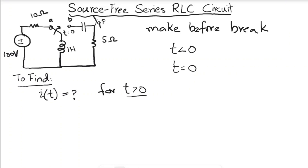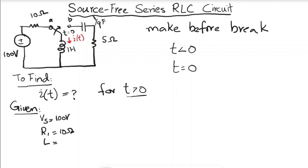We have to find the current i(t) for t greater than zero. The given values are: Vs = 100 volts, R1 = 10 ohms, L = 1 henry, C = 1/9 farads, and R2 = 5 ohms.